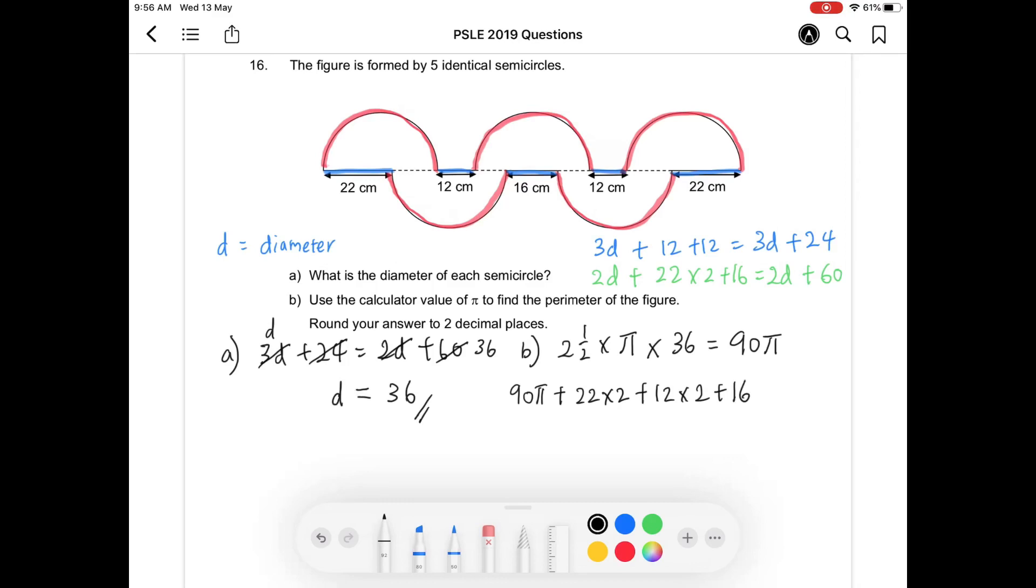So if you use your calculator, the answer is pretty long. That's why they got you to round off your answer to 2 decimal places. And this is what you should do. Put approximately equals to 366.74. Okay, so this is how you present your working and the answers in an elegant way.